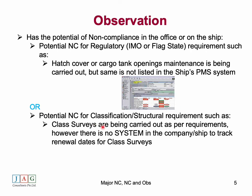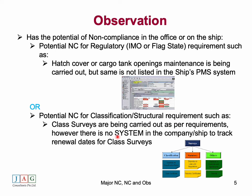Another example: the class surveys are being carried out as per requirements, however there is no system in the company or on the ship to track the renewal dates for class surveys. At the moment everything is fine, but because they do not have a system to track renewal dates for class surveys, there is a possibility that in future this could lead to a non-compliance — so that's classified as an observation.